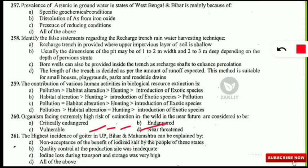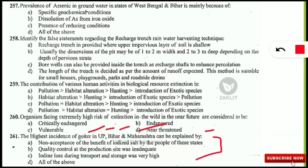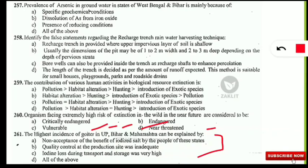The next question: the highest incidence of goiter in UP, Bihar, and Maharashtra can be explained by which reason? Goiter is caused by iodine deficiency. The correct option is 'all of the above': non-acceptance of iodized salt by people due to negligence, inadequate quality control at the production site, and loss of iodine during transport and storage — all are major reasons for the high incidence of goiter in these states.